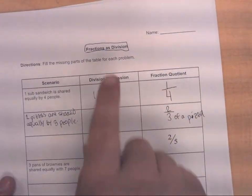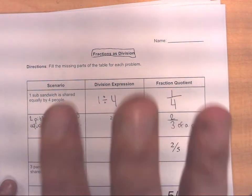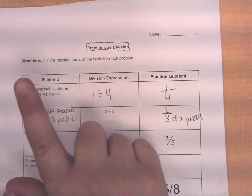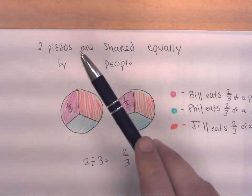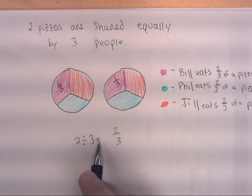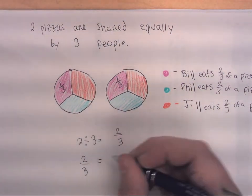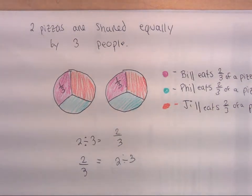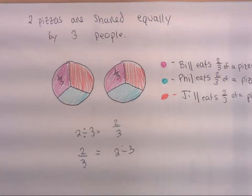The idea of fractions as division is the main concept this second unit is all about — connecting scenarios, division expressions, and fraction quotients together. We use scenarios and diagrams to help us understand why two divided by three equals two-thirds, and why two-thirds equals two divided by three. I hope this video helps. Please let me know if you have any questions.